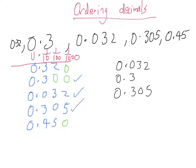Next smallest is 0.32, taking out that extra zero. And finally we've got 0.45.